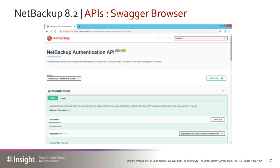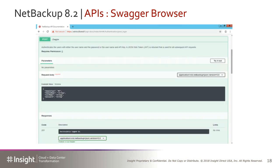In NetBackup 8.2, they added the Swagger browser. This gives you a very interactive method to look at the APIs that NetBackup has available and how you can leverage them. You don't have to be a scripting guru or understand APIs in general — you can see very quickly what command it would take to invoke that API. One thing to note: if you do run one of these modules from the Swagger browser, it is actually going to call a command to your NetBackup master server. So you do need to know what these commands do, but it allows you to explore the API capabilities in a visual format.